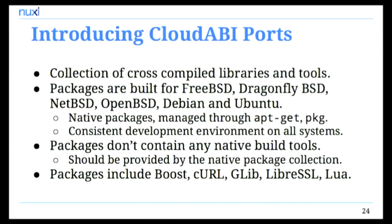What I've come up with is something called Cloud ABI Ports — a package collection of pre-built Cloud ABI software. Instead of having my own package manager, I build the packages once and turn them into Debian packages, FreeBSD packages, NetBSD packages, etc. You just add a couple of lines to your sources.list on Debian or pkg.conf on FreeBSD and then manage these Cloud ABI packages with your native package manager. All packages, independent of which operating system you're using, contain exactly the same contents byte-for-byte. I've already ported quite a lot of software — I think I'm up to 80 packages. There are already interesting pieces of software: Boost for C++ development, curl for HTTP connections, even glib, libssl, and Lua as a scripting language. I'm still working on Python support, which would be interesting for getting Django web applications to work on top of Cloud ABI.